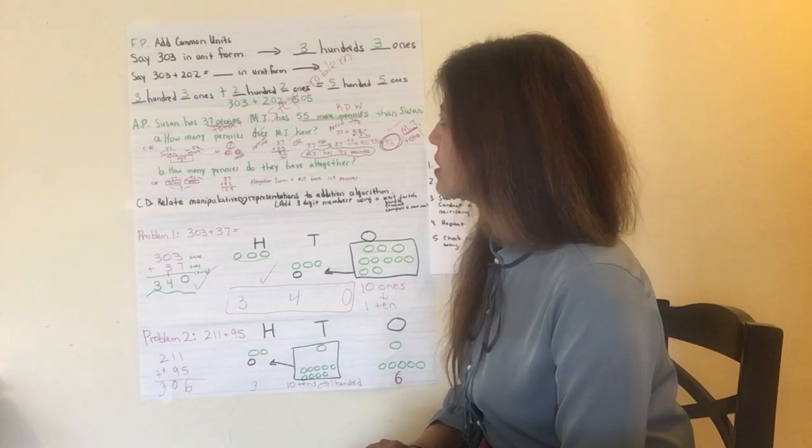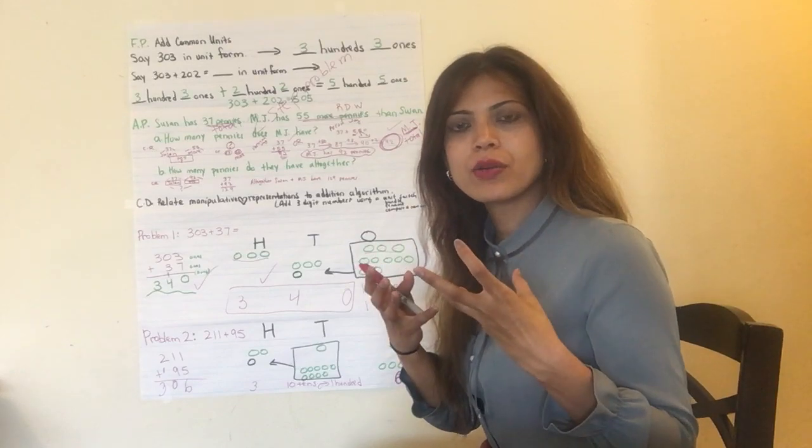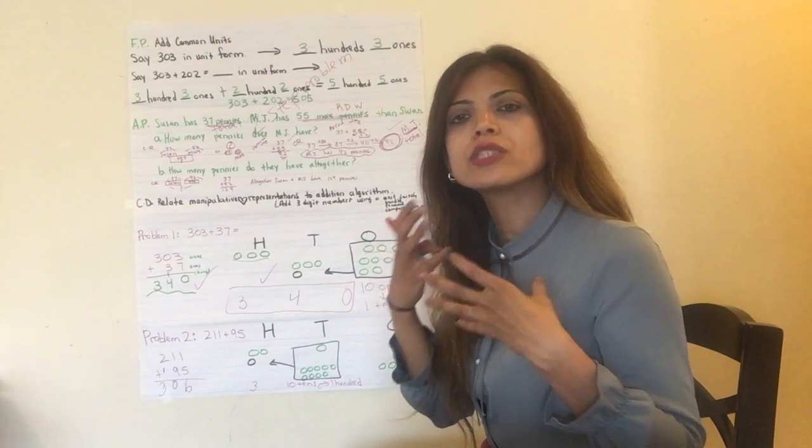303 plus 202 equals 505. You can now visually see it as well when you use the number sentence. There's the 3 ones and the 2 ones. There's the 0 tens and the 0 tens, the 300 and the 200. Visually looking at the common units. That is, it's very important to conceptually see numbers. That's what we really want to start learning to do.